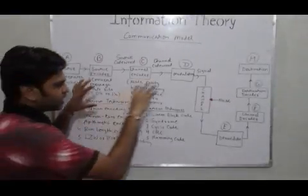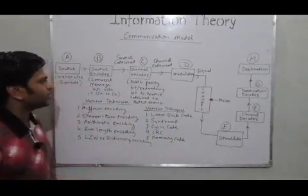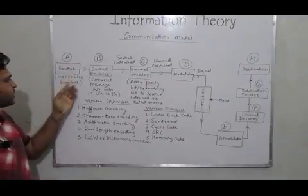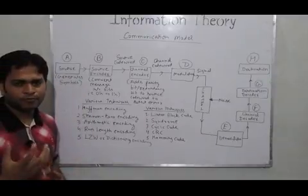In this entire diagram, you can simply see that here is a source which has a prime task to generate some symbol in the form of message.